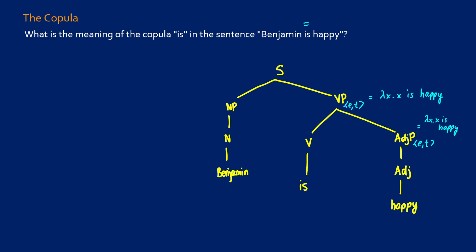So what does that mean in terms of our type for the copula? We see two things: we need to input an et and we need to output an et. So this means that for our type, the copula has to be type (et)(et).